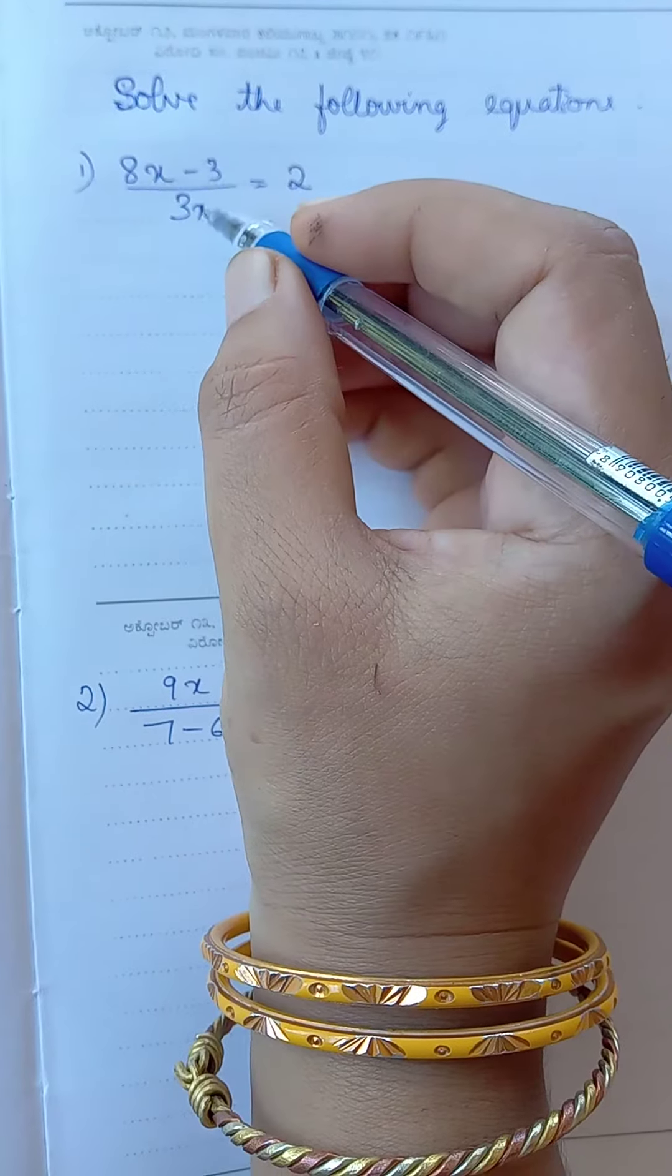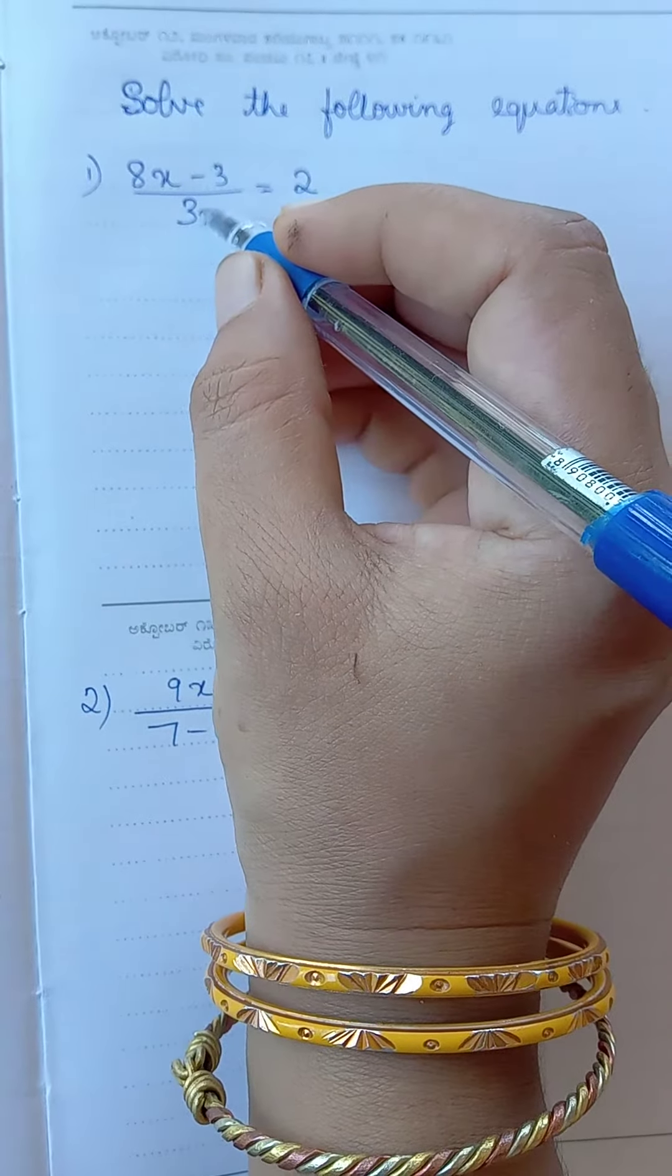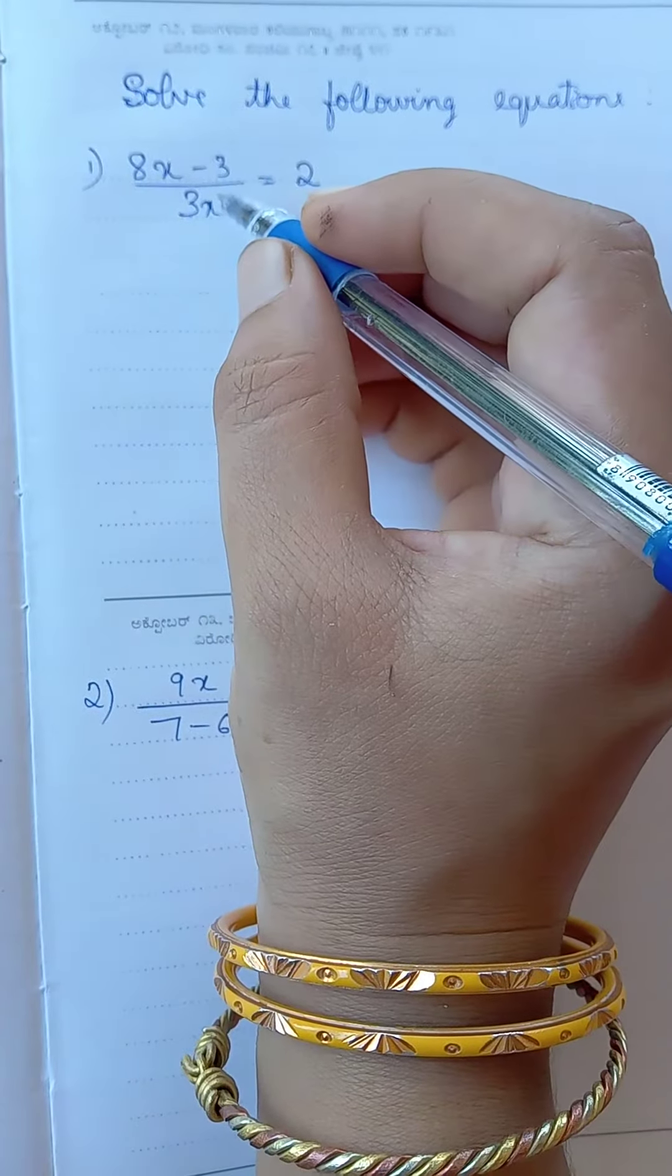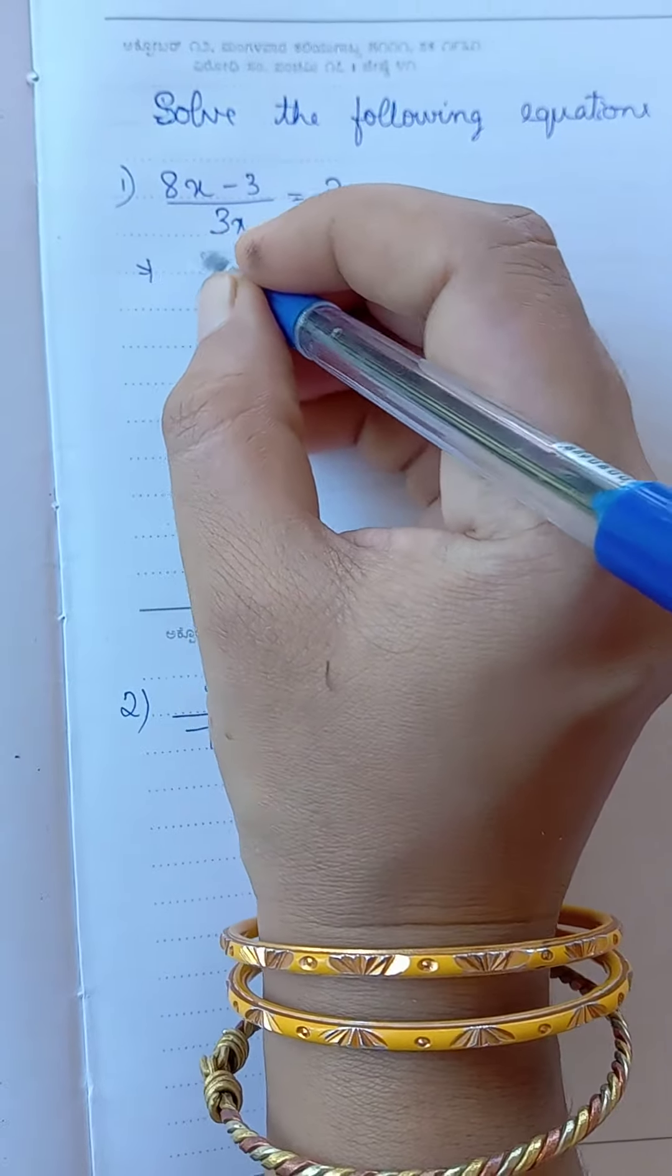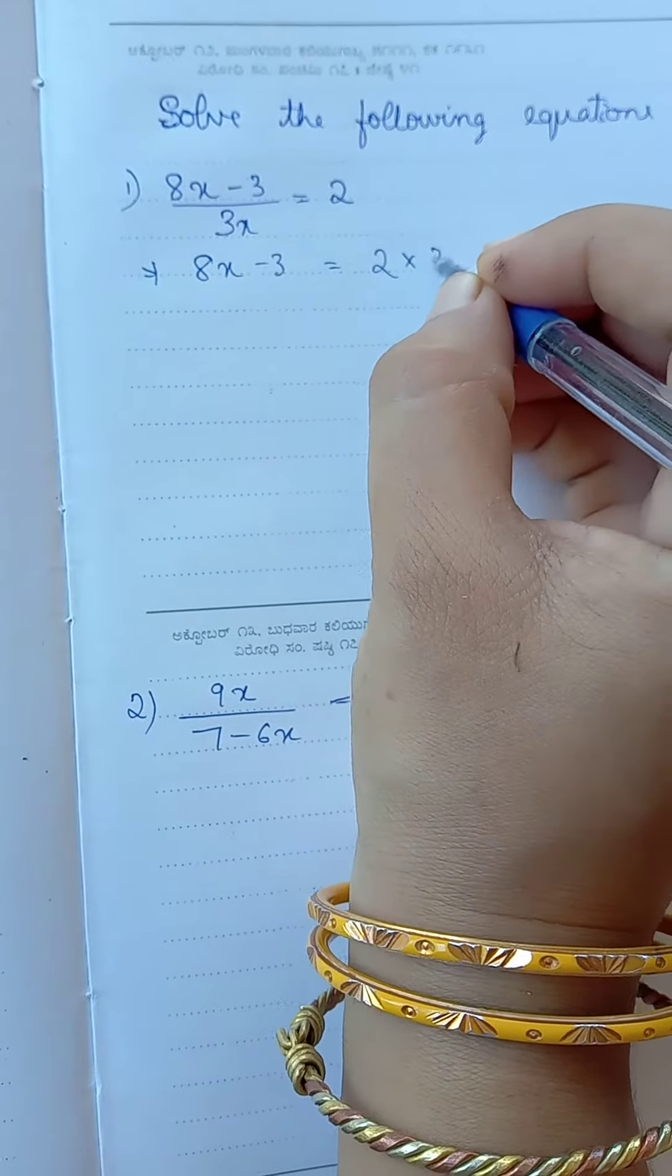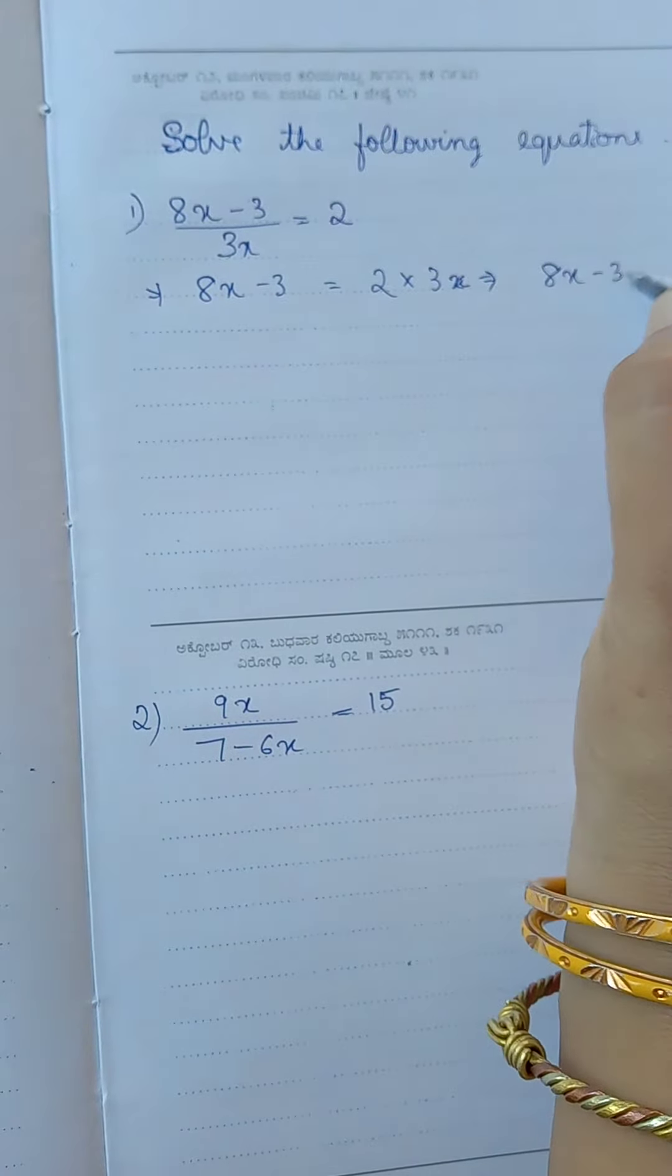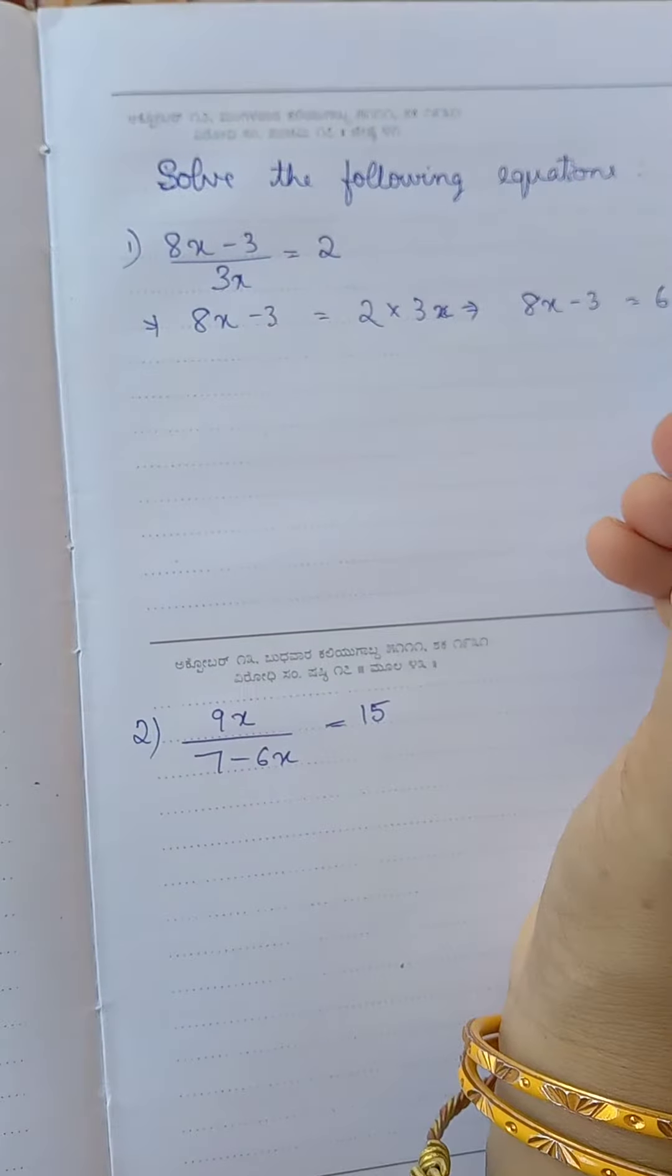So 8x minus 3 divided by 3x equal to 2. We need to transpose the term in denominator to numerator when we move the term from LHS to RHS. That implies 8x minus 3 equal to 2 into 3x, or 8x minus 3 equal to 6x.